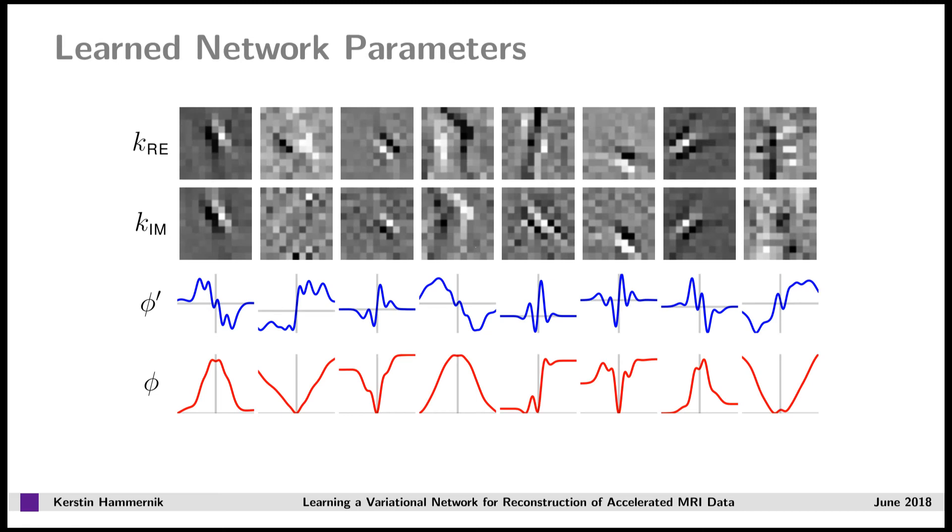Here, I show you some results of the learned parameters. In the first two rows, you see the results for the real and imaginary part of the filter kernels. In the third row, you see the learned activation functions, and in the last row, you see the integrated activation functions, which can be related to the potential functions in the compressed sensing model. We observe different derivative filter kernels of various scales and orientations, and for the potential functions, we see functions which are very close to the convex L1 norm, concave functions, and functions with multiple minima.